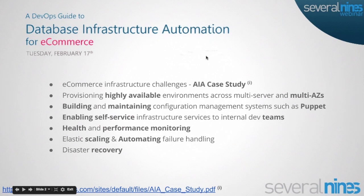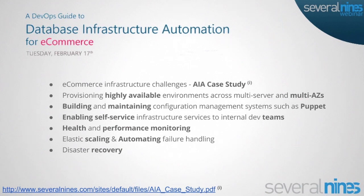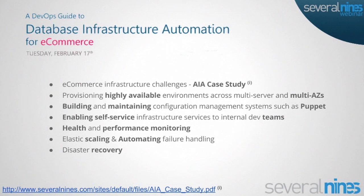In today's webinar I'll discuss e-commerce infrastructure challenges, using a previous company I worked at — Africa Internet Accelerator — as an example. There's a link to the case study at the bottom and I encourage you to read it. We'll also discuss provisioning highly available environments across multi-server and multi-availability zones on AWS, building and maintaining configuration management systems such as Puppet, enabling self-service infrastructure to internal dev teams, health and performance monitoring tools, elastic scaling and automating failure handling with code examples, and finally disaster recovery with code examples you can use immediately.